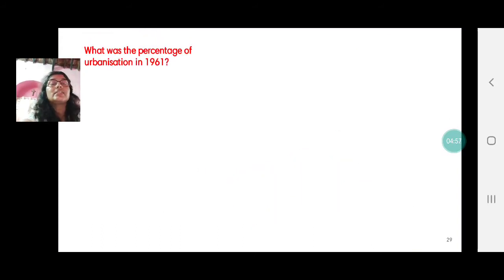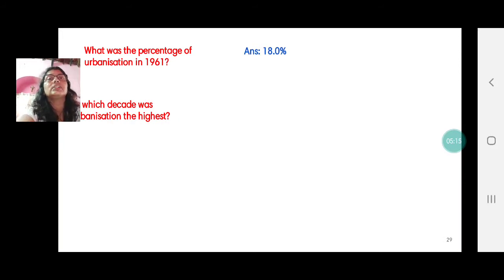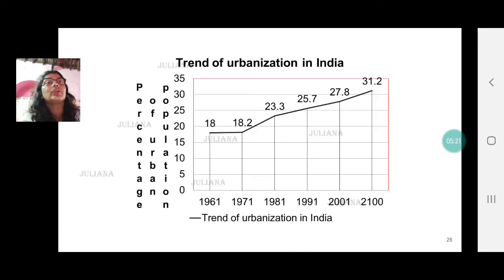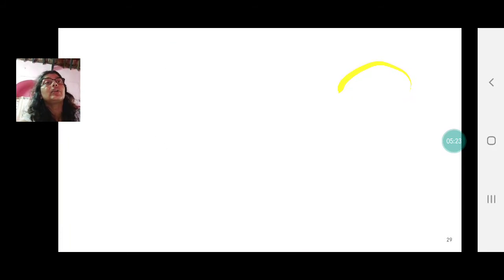Now there are a few questions which we need to answer on page 48. What was the percentage of urbanization in 1961? That's very clear from the graph it is 18.0 percent. Do not forget to write the unit percentage. The second question is in which decade was urbanization the highest. As I told you urbanization was highest, they didn't ask you for the growth. So 31.2 is the highest urban population.